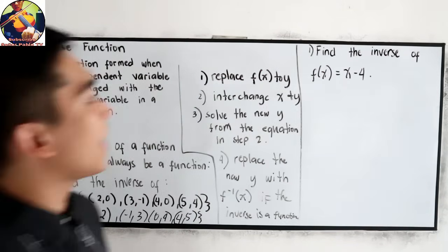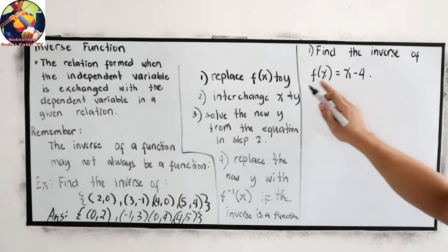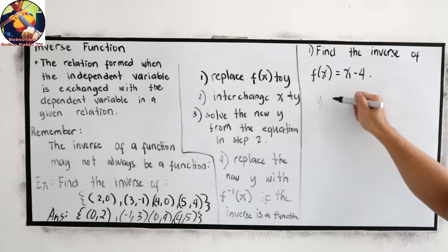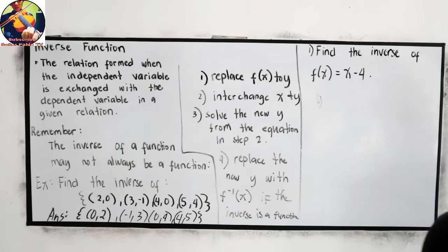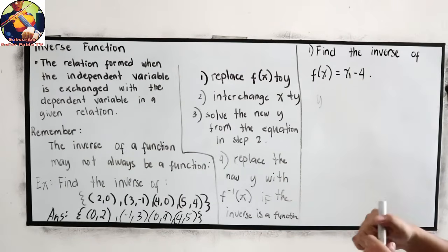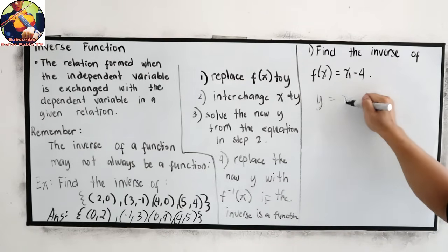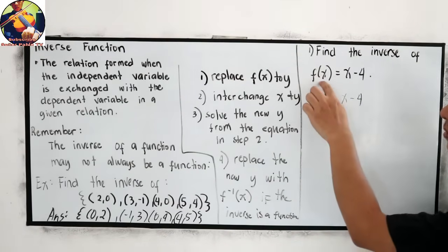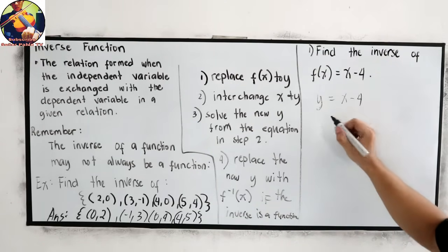Let us apply our steps to example number 1. Step 1 — replace f(x) with y: y is equal to x minus 4. Step 2 — interchange x and y: our y changes to x and our x changes to y.